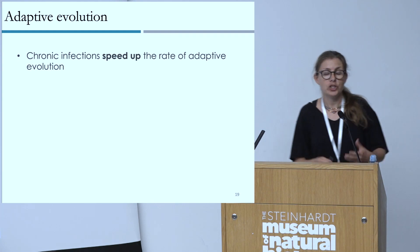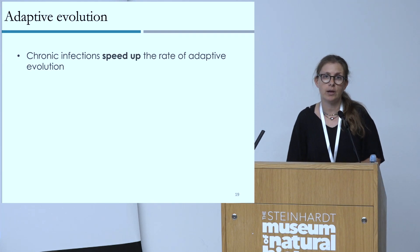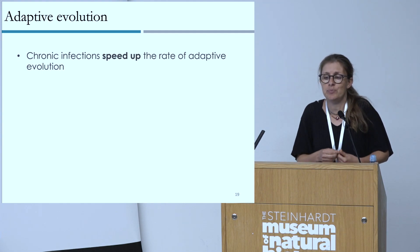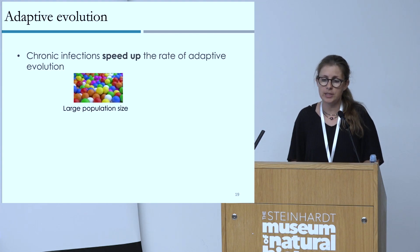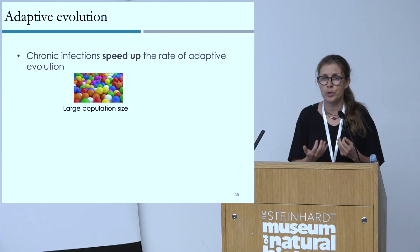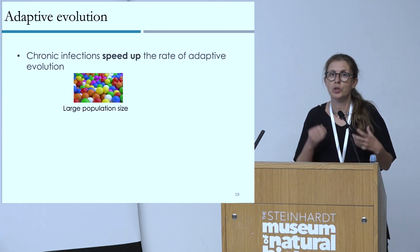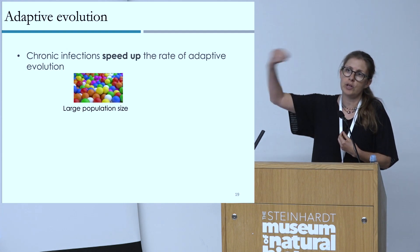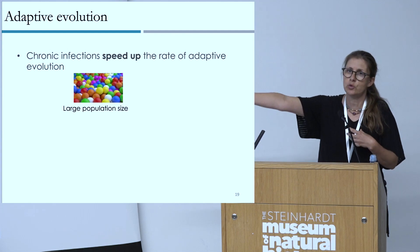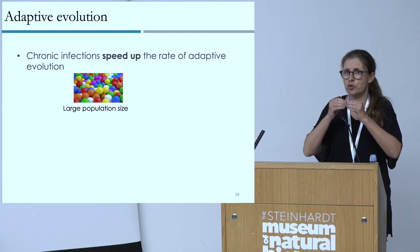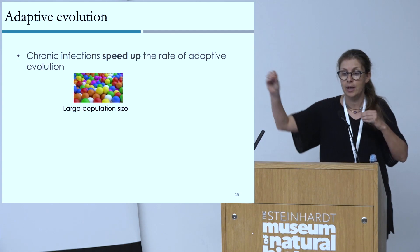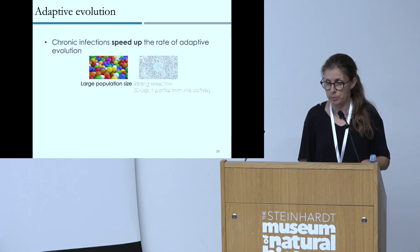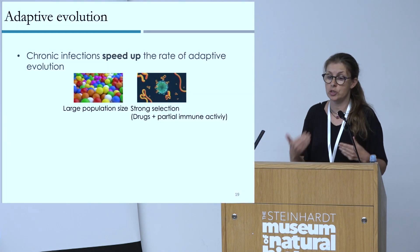What we've found is that chronic infections speed up the rate of adaptive evolution — for two reasons. One, the population size of the virus is larger in these infected individuals, and they don't go through a transmission bottleneck. When one person transmits to another, there is a very stringent bottleneck and very few viruses are transmitted, which slows down evolution significantly. In chronically infected patients, we don't have that. Two, there are strong selection pressures from drugs and partial immunity.